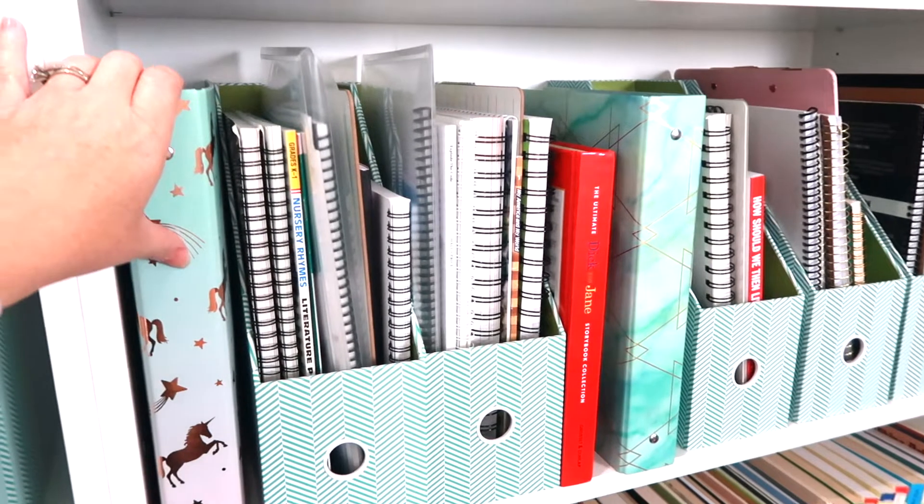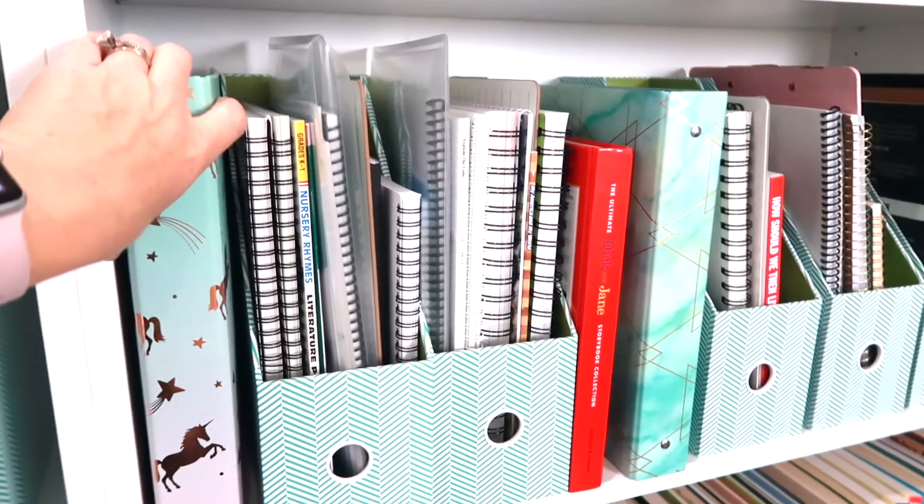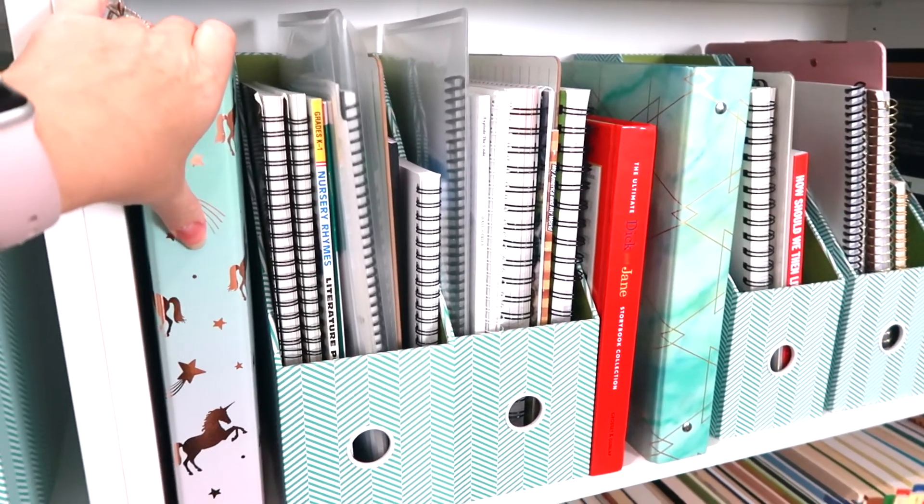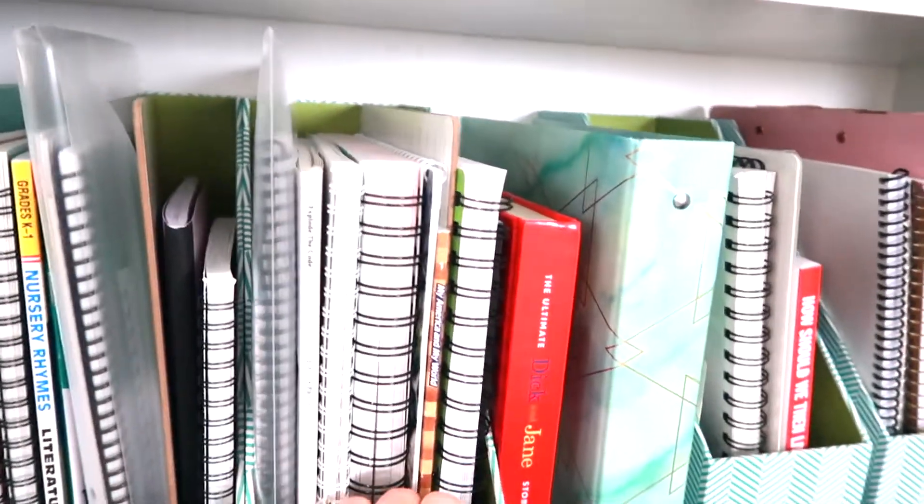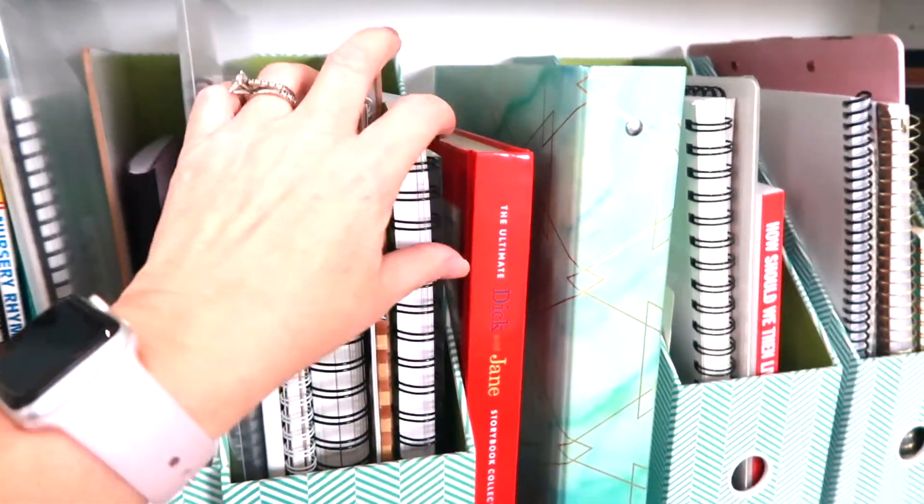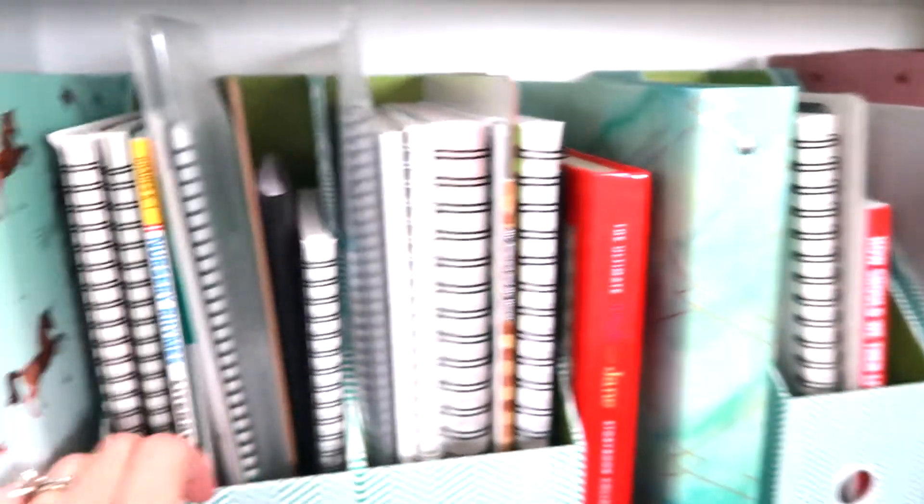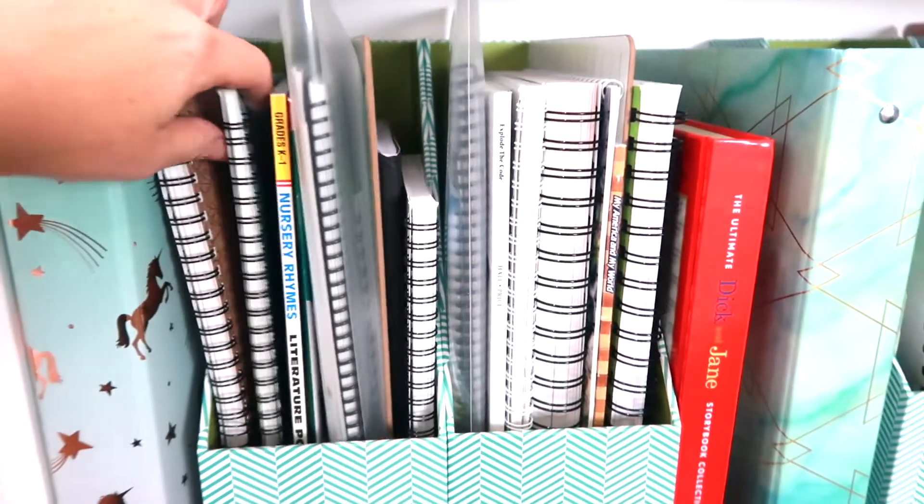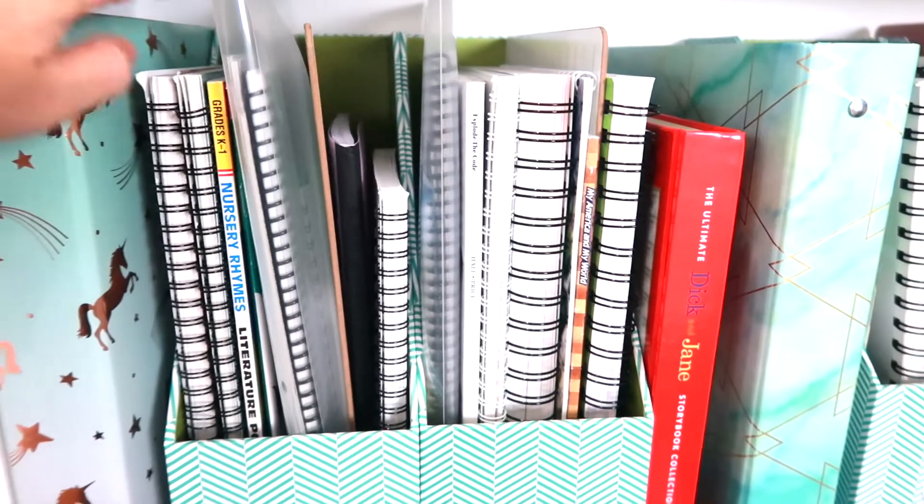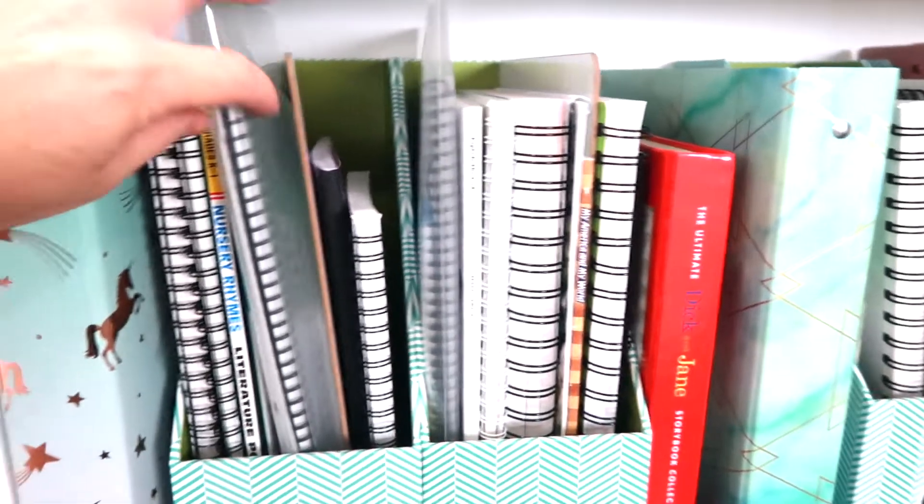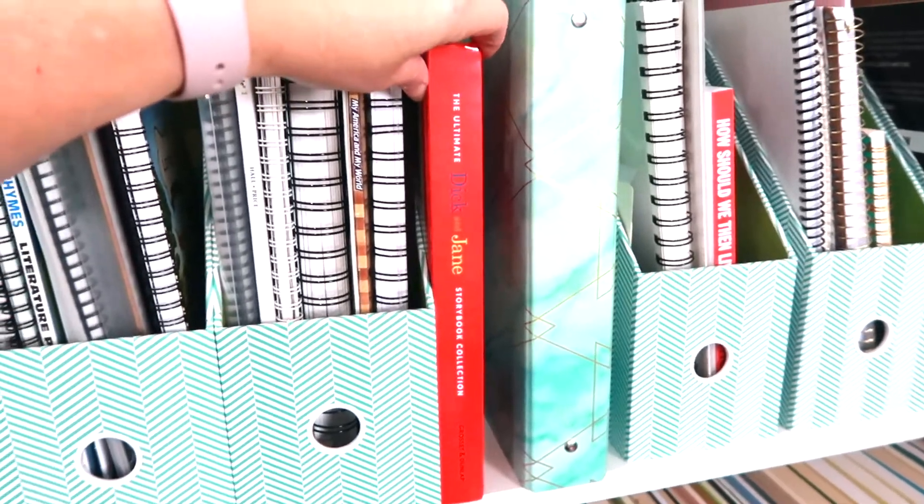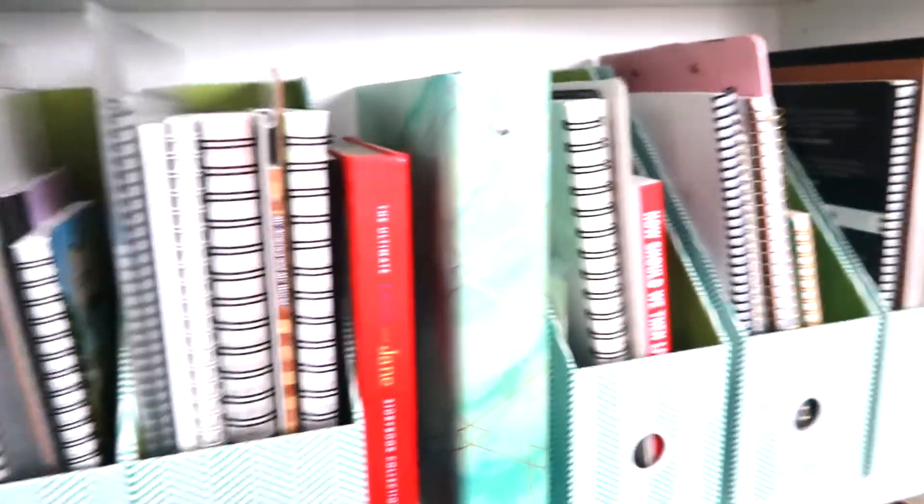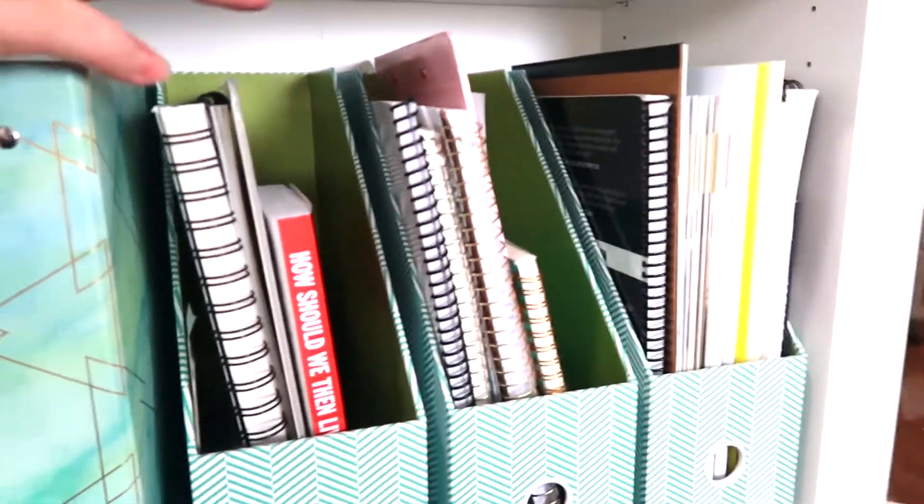This is the curriculum we are currently using. Sophie has a binder with a lot of her math things in there from the Good and the Beautiful level one. This is what she uses every single day, all of her curriculum that we use every day. Then this is some extra stuff and some things we don't use quite as much like a nature journal and some art and one of her science units that we haven't started yet. I also use this Dick and Jane storybook collection with her.